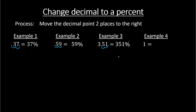What about example four? We have 1. There's just one digit, and the decimal point is assumed to be at the end — that goes for any number. If there's not one written, it's assumed to be at the end. So this is 1.00. To move the decimal point two places, we add zeros: it goes over one, two places to the right, which gives us 100, or 100%. So 1 is 100%.